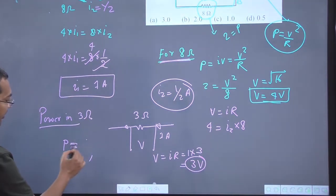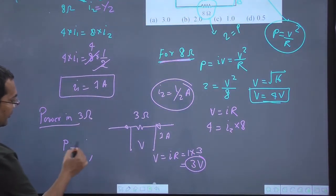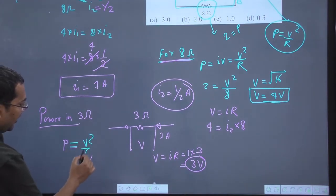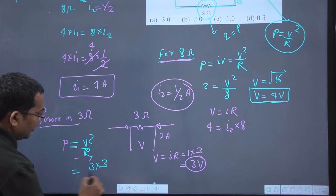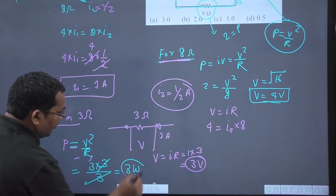From here I can easily calculate the power. Power equals V squared over R. V squared is 3 times 3, and the resistance is 3, so that cancels out giving 3 watts.